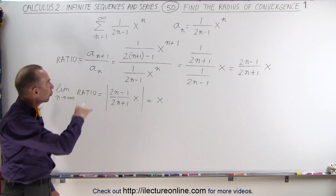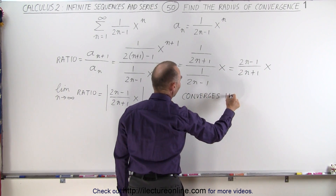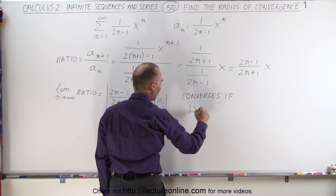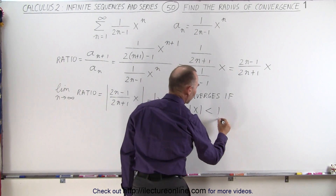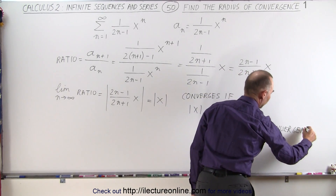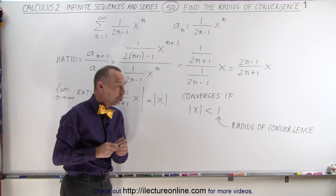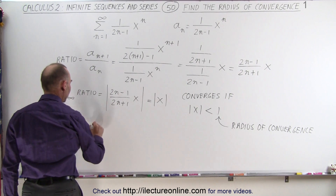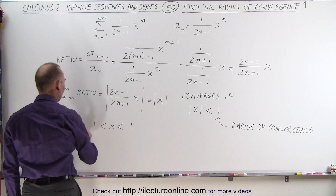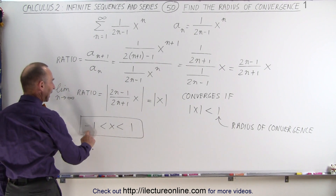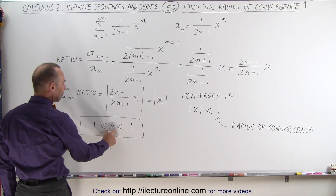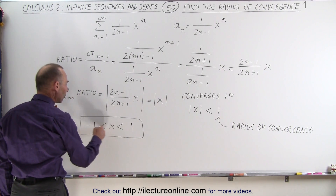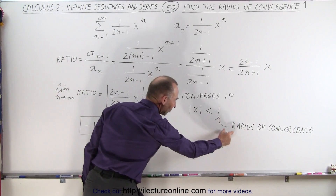The infinite series will converge if the absolute value of x is less than 1, and this becomes the radius of convergence. The total interval has length 2, but we need to know where it starts and ends. Solving for x gives minus 1 less than x less than positive 1, so the series converges for x in (−1, 1). The center value is 0, and the distance from the center to either end is 1, which is the radius of convergence.